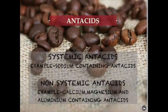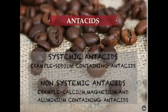Non-systemic antacids are insoluble and not readily absorbed by the GIT. Examples include calcium, magnesium, and aluminum-containing antacids. Calcium and aluminum-containing antacids cause constipation, while magnesium-containing antacids produce a laxative effect.